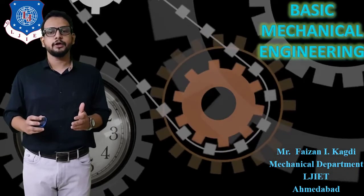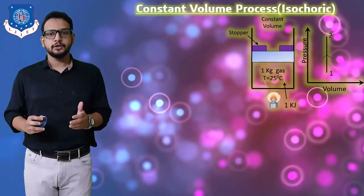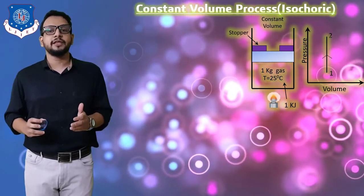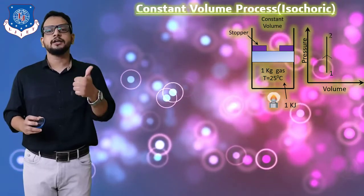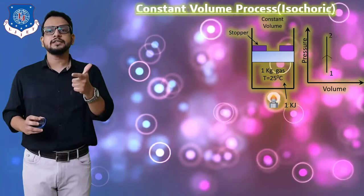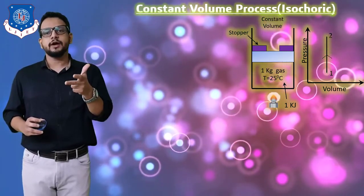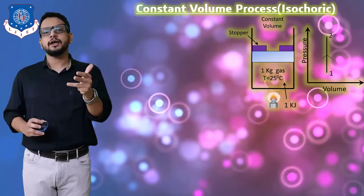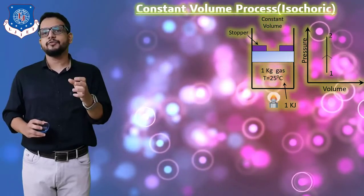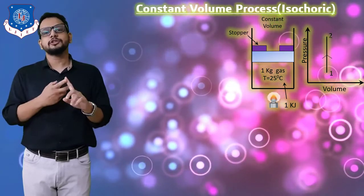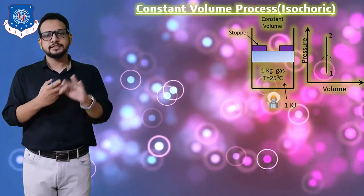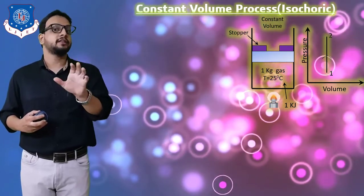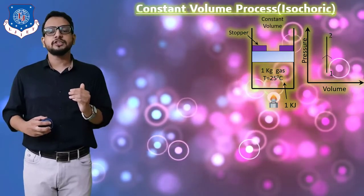So let's start with our topic of constant volume process. If you remember, in our last session I told that we need to find out five things: first, how much heat energy has been supplied; second, work done by the system or not; third, change in internal energy; fourth, change in enthalpy; and fifth, the relationship among pressure, temperature, and volume for this process.